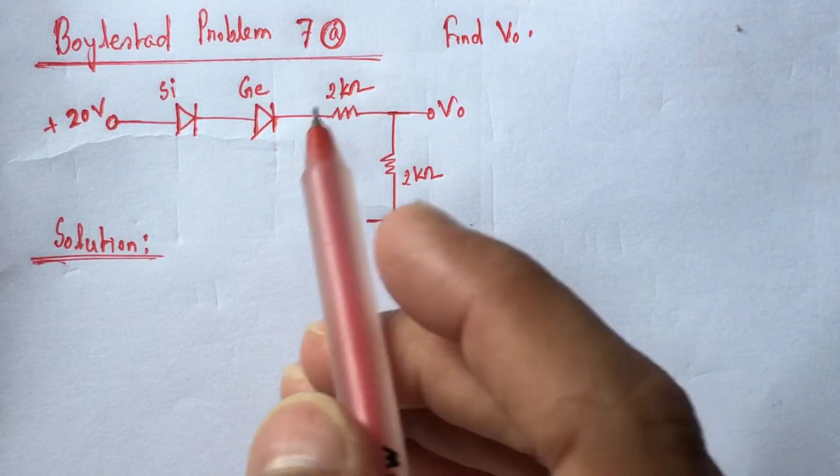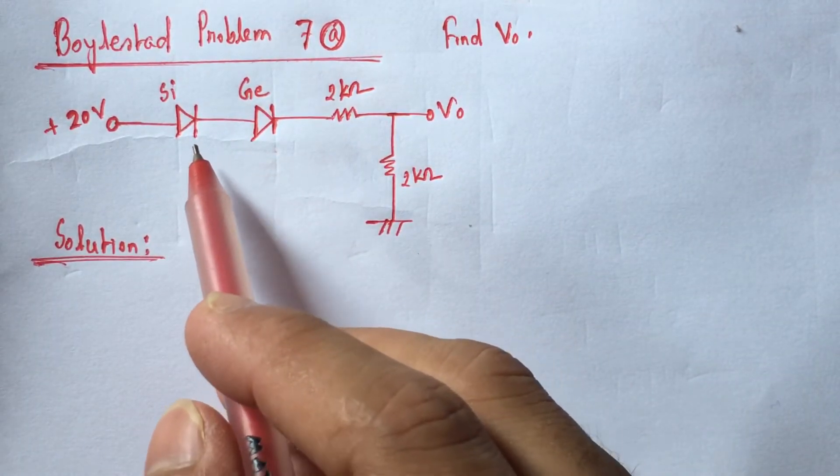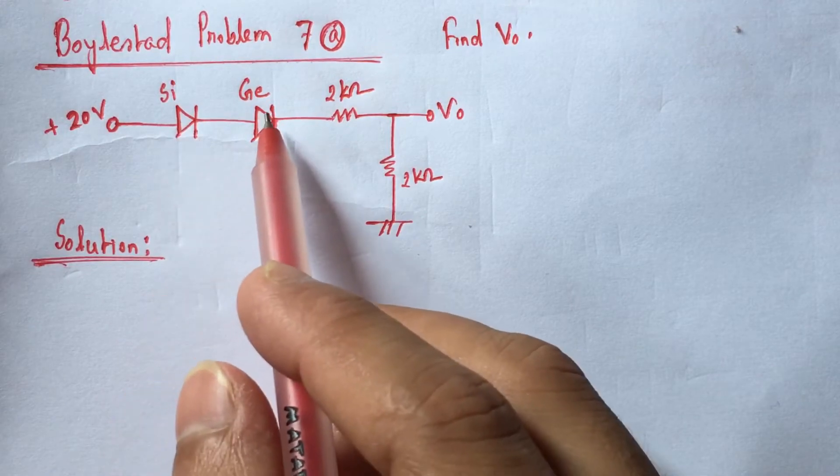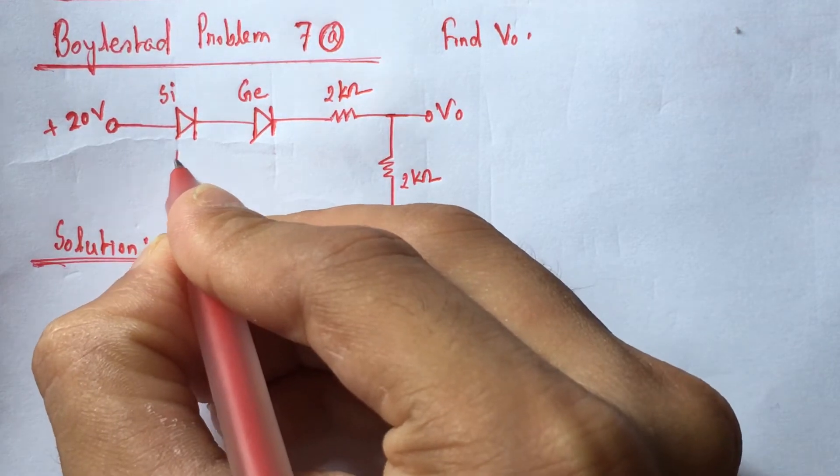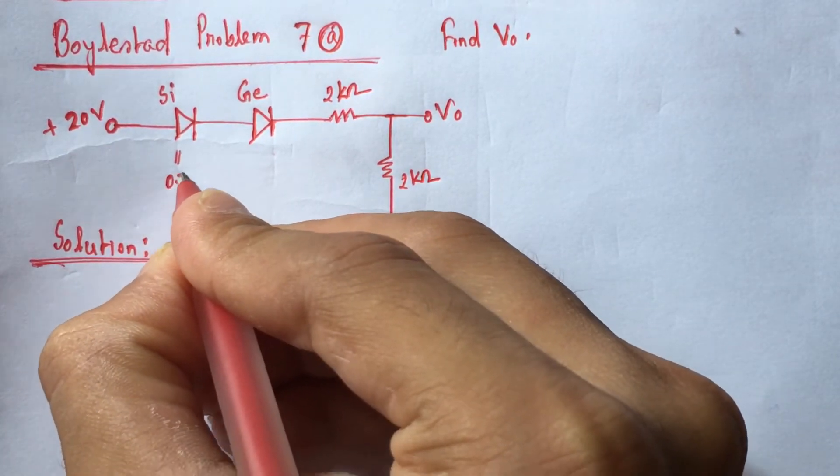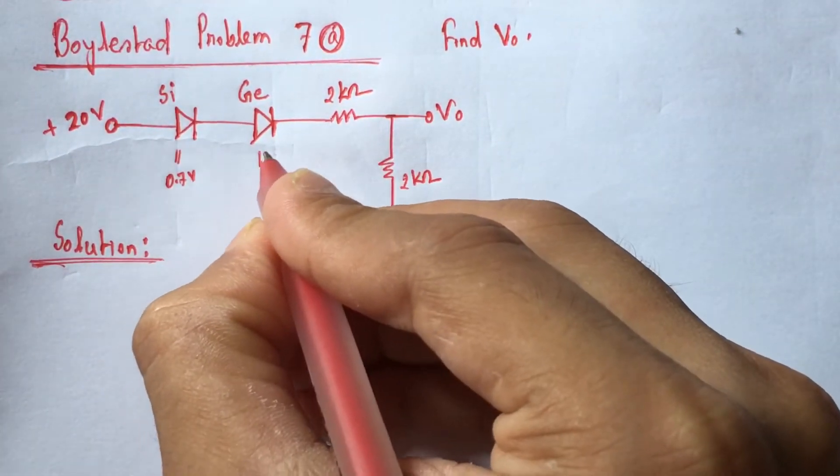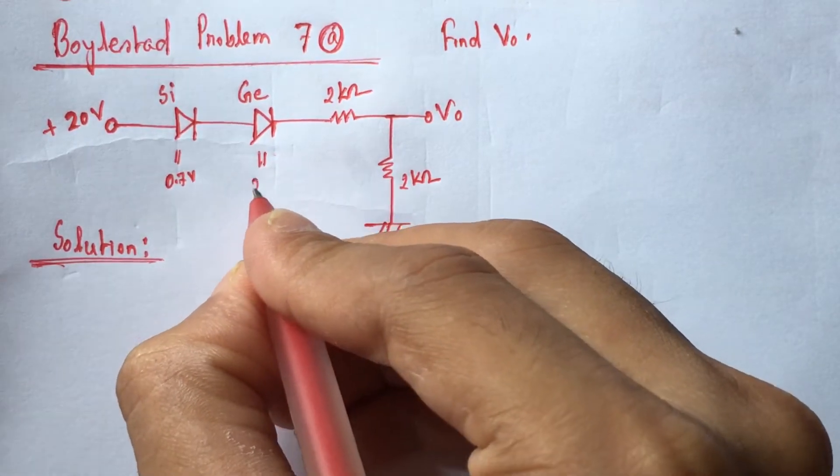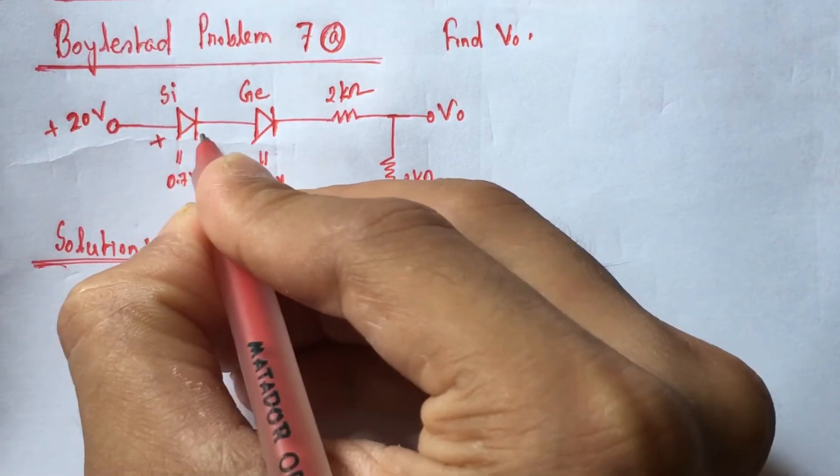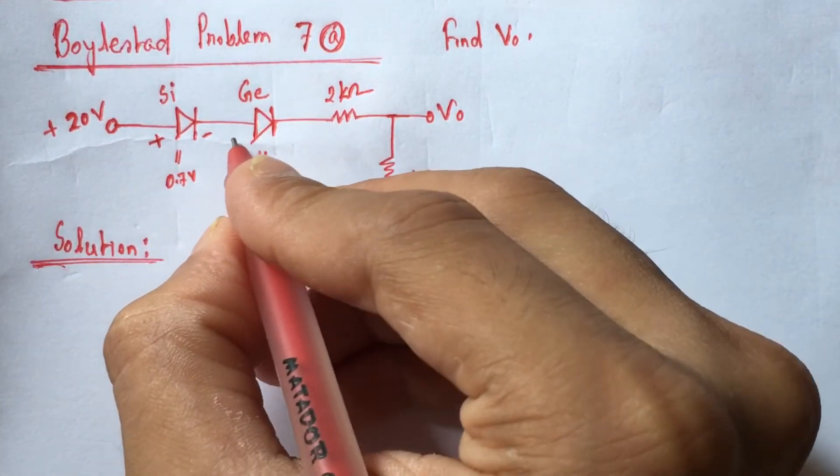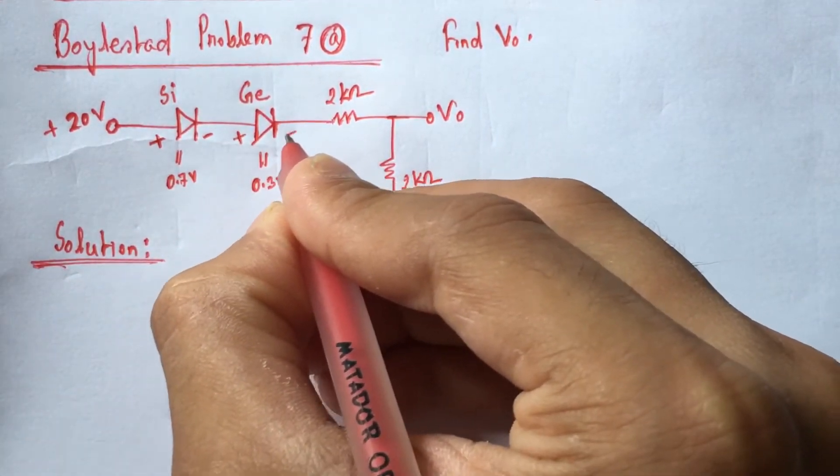From the circuit we see that two diodes exist: one silicon diode and one germanium diode. We know that for the silicon diode, the voltage drop is 0.7 volts, and for the germanium diode, the voltage drop is 0.3 volts. The polarity of the silicon diode is plus here, minus here, and the polarity of the germanium diode is plus here, minus here.